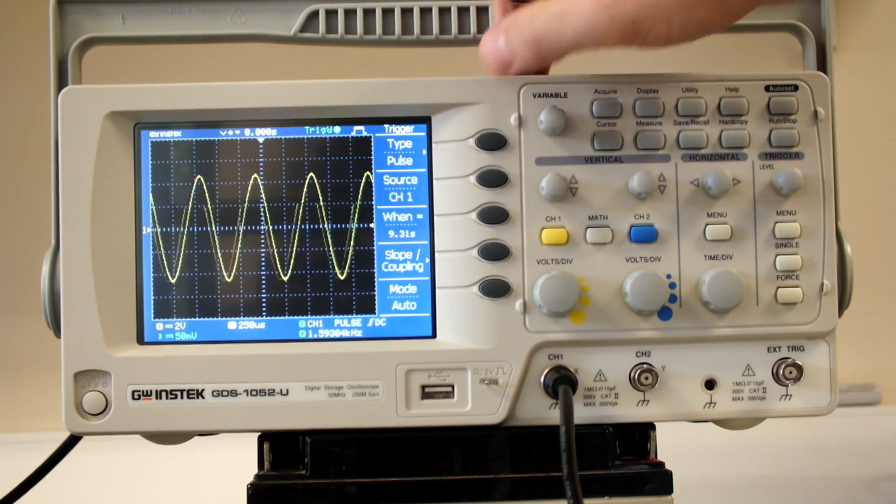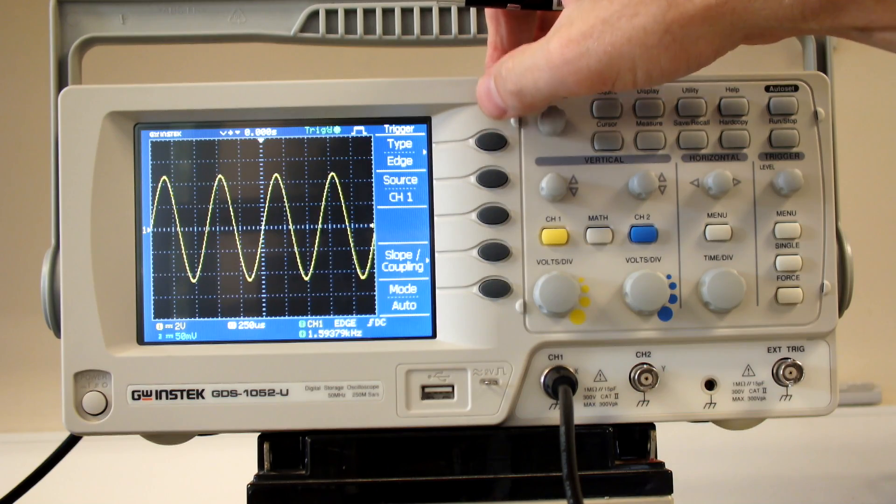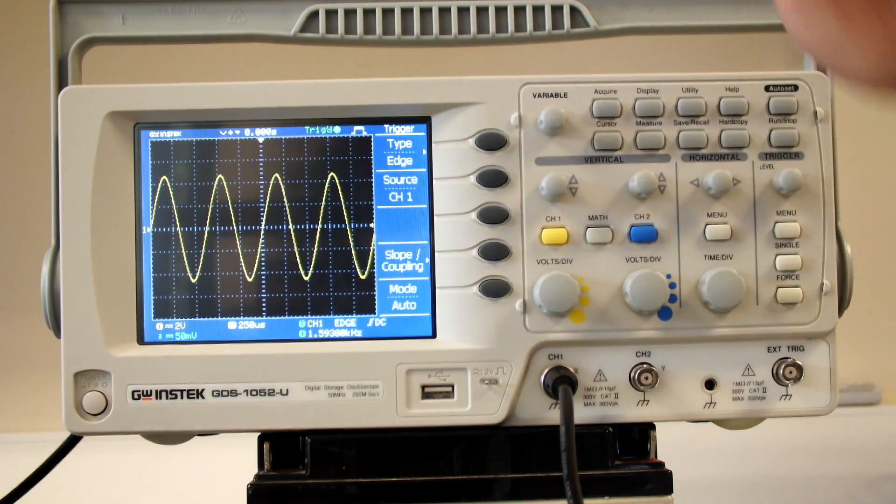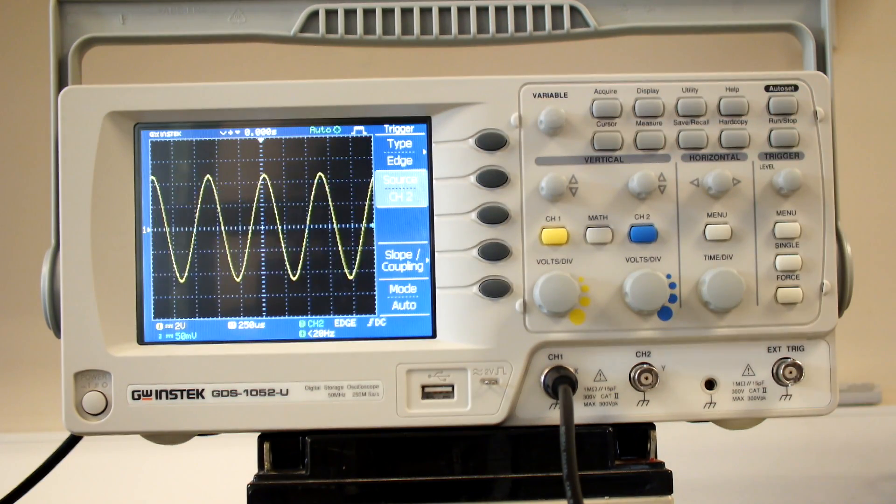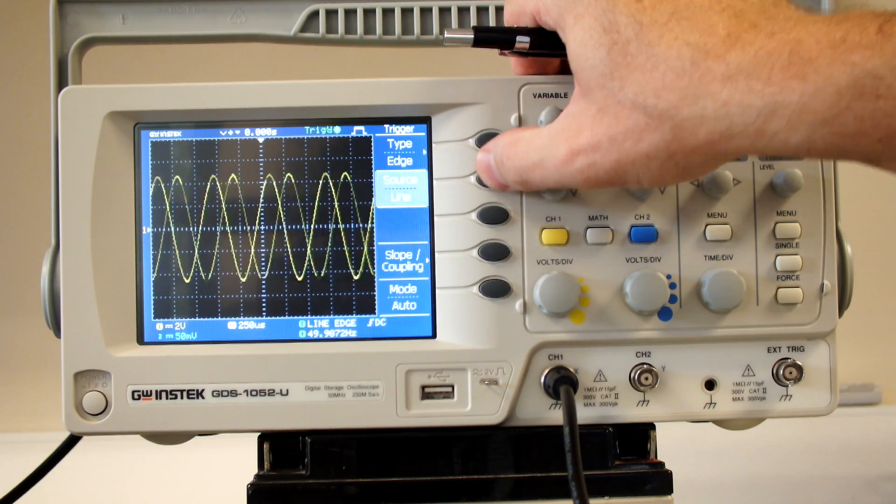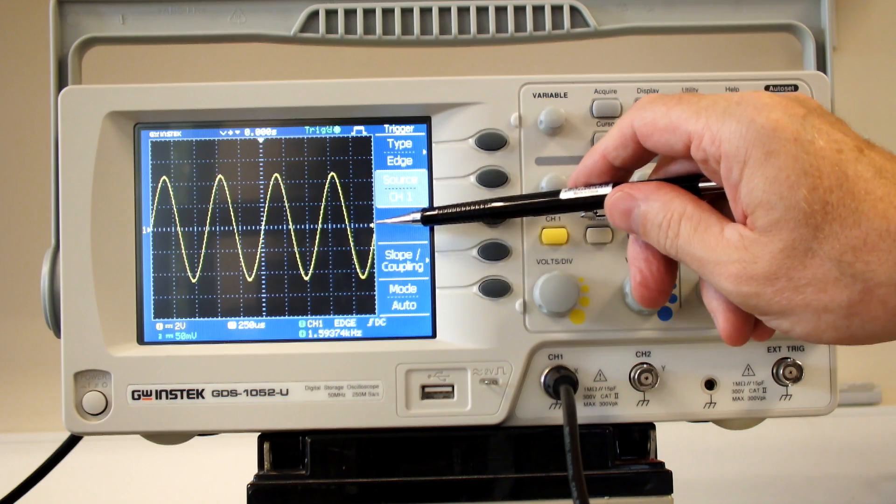If I look at that, I can change it to pulse or video. We want an edge. It's using channel 1 as a source. If I go to channel 2, there's no signal there, so the trigger is lost and the waveform is unstable. So go back to channel 1.